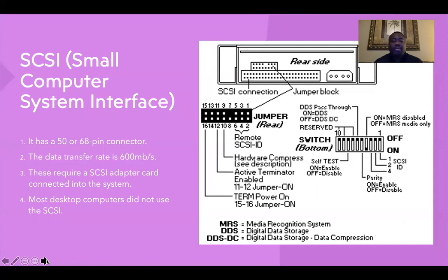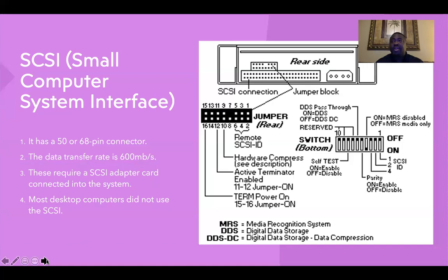Now the Small Computer System Interface. It has 50 or 68-pin connectors. The data transfer rate is up to 600 megabytes. These require a SCSI adapter card, and they are connected into the system. Most desktop computers did not use SCSI.